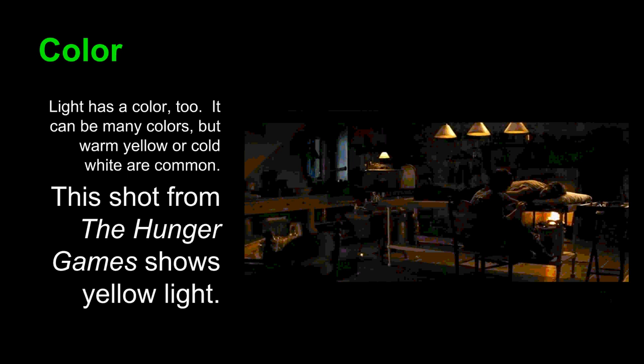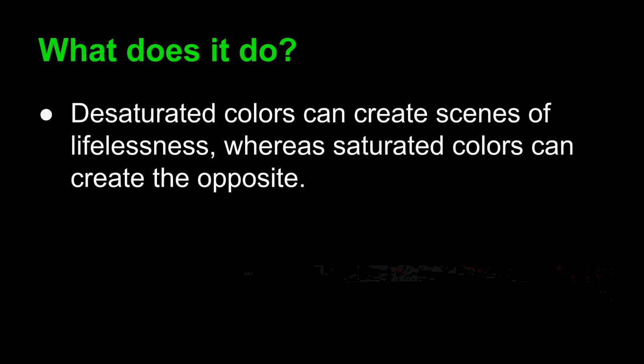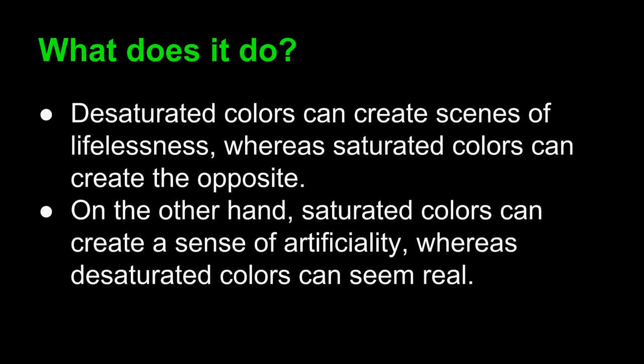The color of light can express that difference. So what does color do? Desaturated colors can create scenes of lifelessness, whereas saturated colors can create the opposite. But that's not always true — saturated colors can also create a sense of artificiality, whereas desaturated colors can seem real. In real life, saturated, vibrant, bright colors are rare and often created through artificial means, whereas the natural world is often desaturated. These messages depend upon the story, so do not simply look at desaturated versus saturated color and generate a conclusion automatically. Think about how they relate to the events of the story.